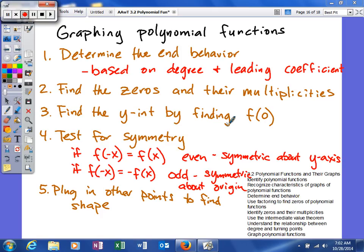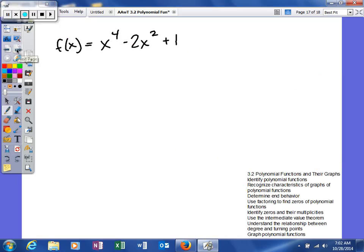We can also look at the function sometimes if it's written in polynomial form and look at the degrees to see if that will help us with our symmetry. And lastly, we're going to plug in other points to find the shape of the graph. So let's see if we can work on one. Here's our example, f(x) is equal to x to the fourth minus 2x squared plus one.